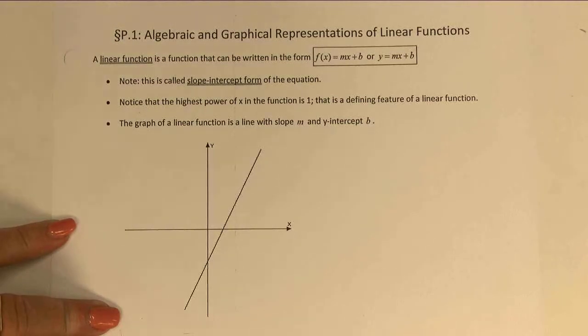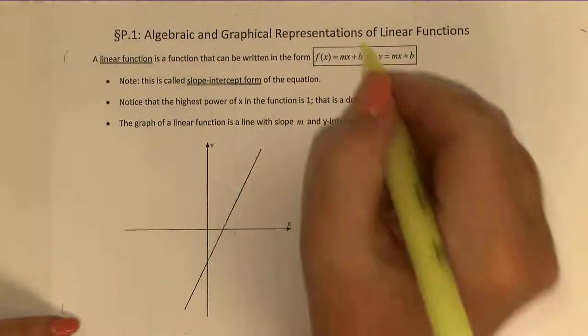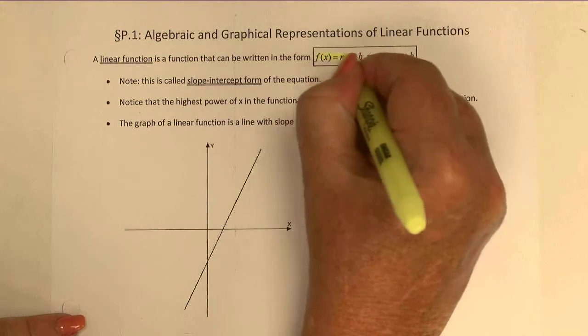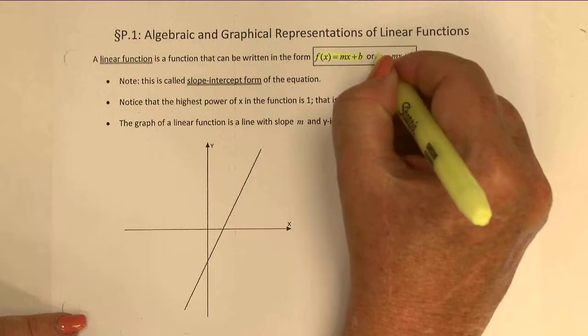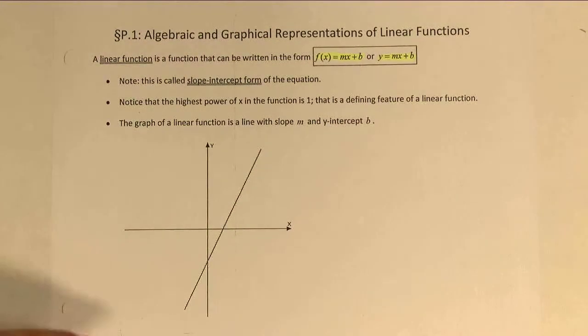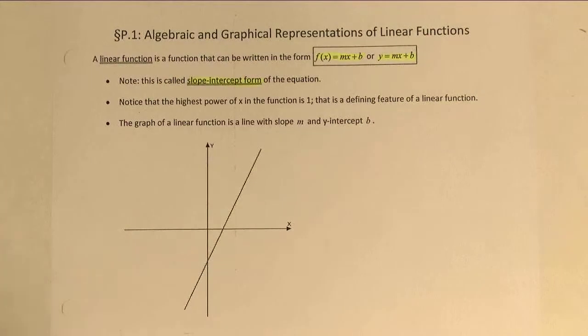A linear function is actually any function that can be written in this form, f(x) = mx + b, or if you don't want to use function notation, you could simply call it y = mx + b. This notation is actually called the slope-intercept form of the equation. Algebraically, these equations can be manipulated so they look a little bit different, but they can always be simplified to that form.